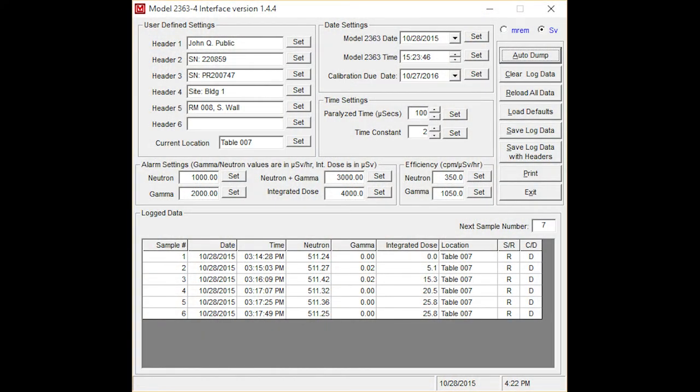The Model 2363 comes with a CD that contains the computer interface software. This software is used to adjust the alarm settings and other parameters and to calibrate the instrument.